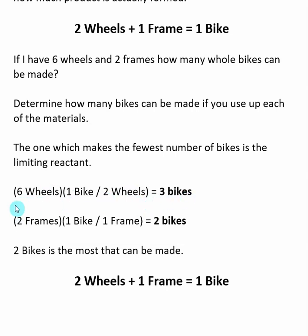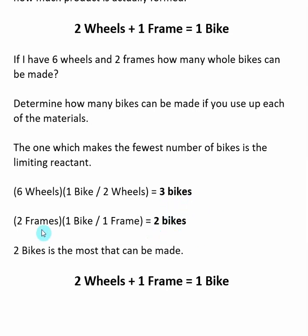You take six wheels and divide by two to get three bikes. If I do the same thing with frames, the reaction says for every one frame I use up, I make one bike. I have two frames, so if I use up all my frames, I can make two bikes. So with six wheels I can make three bikes, and with two frames I can make two bikes. The one that makes the smaller amount of product — in this case the two frames — is going to be my limiting reactant. Between three and two, two is the smaller number, so frames is my limiting reactant.